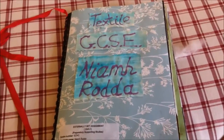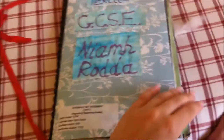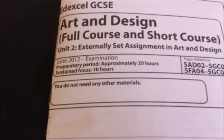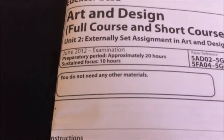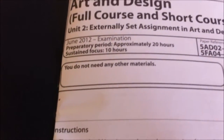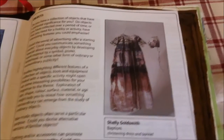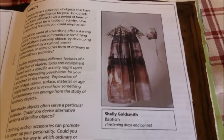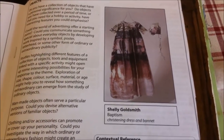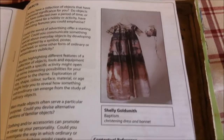Hello, this is my GCSE art textiles exam book and I'm just going to go through it. When you start this course you'll get a booklet and you get 20 hours to make your book, but you also have homework time, and then you've got 10 hours to make your final piece. The booklet will give you your title — Ordinary and Extraordinary — and it will give you some tips as to what you can do. I was particularly interested in the christening dress idea, as it's smaller than an actual sized dress and so easier to manage in the 10 hours.